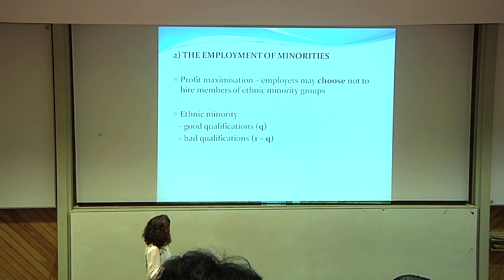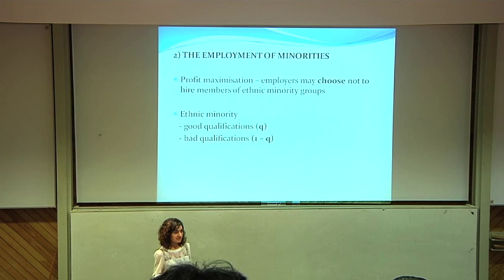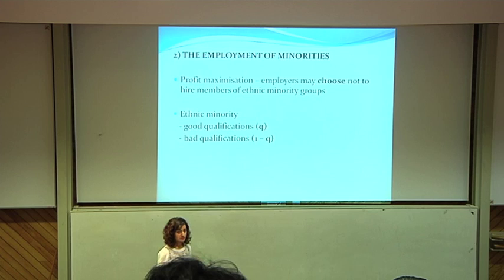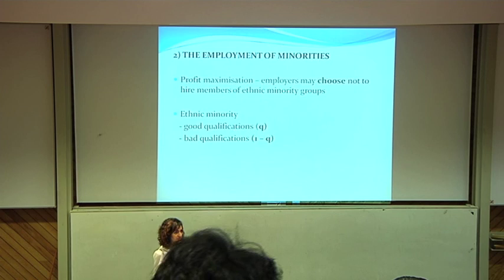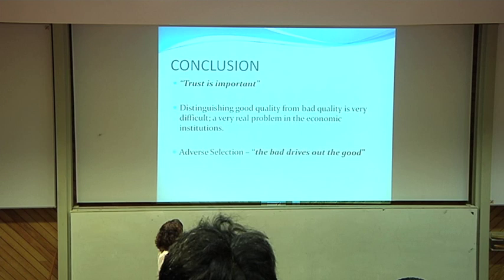Another example is in the employment of minorities. Firms are driven by profit maximisation and they tend to sometimes leave out ethnic minorities and not hire them — not because of prejudice but because they cannot distinguish between applicants with good qualifications and applicants with bad qualifications. Therefore it's difficult for them to know which ones to hire, so they tend to leave them out.